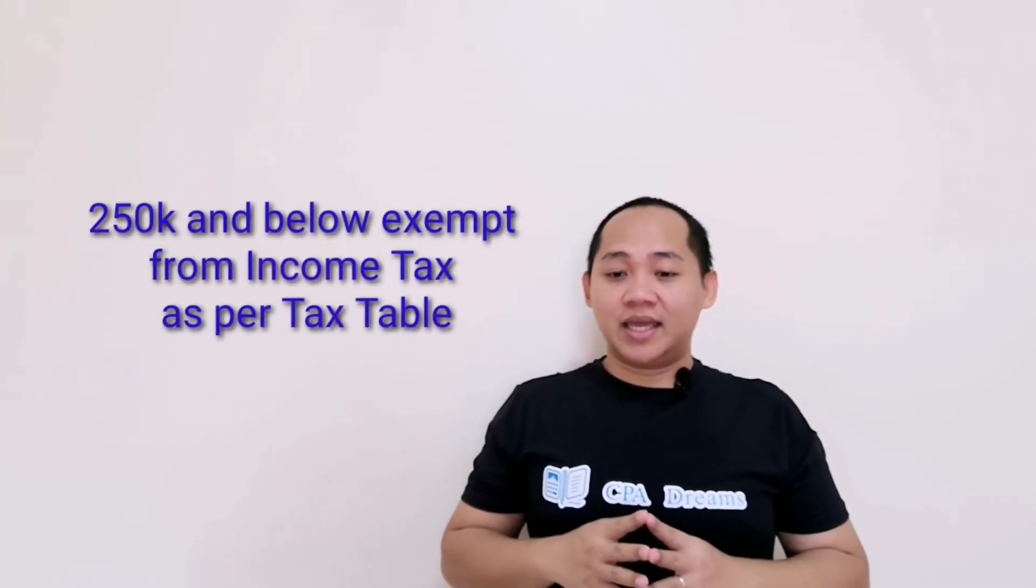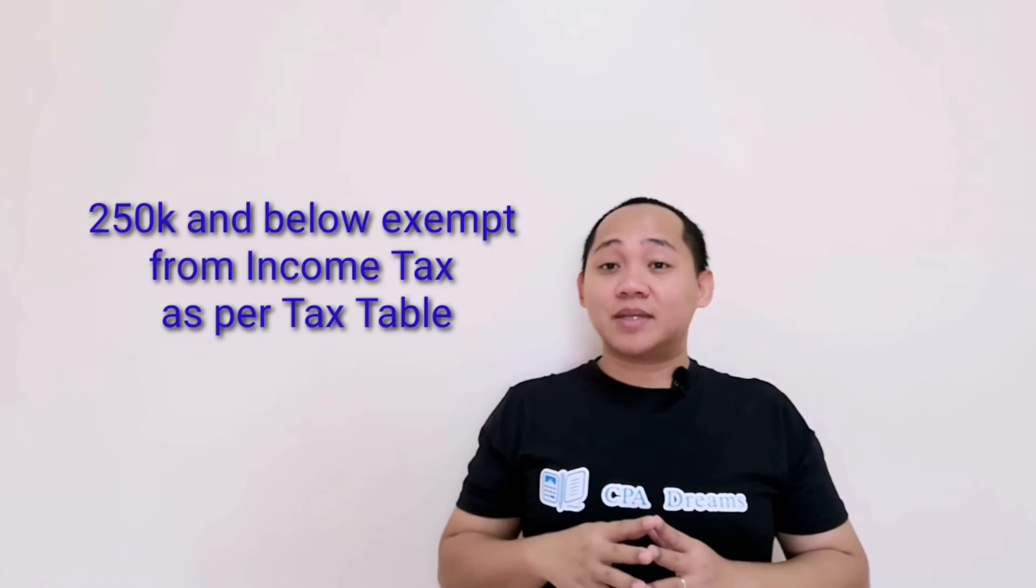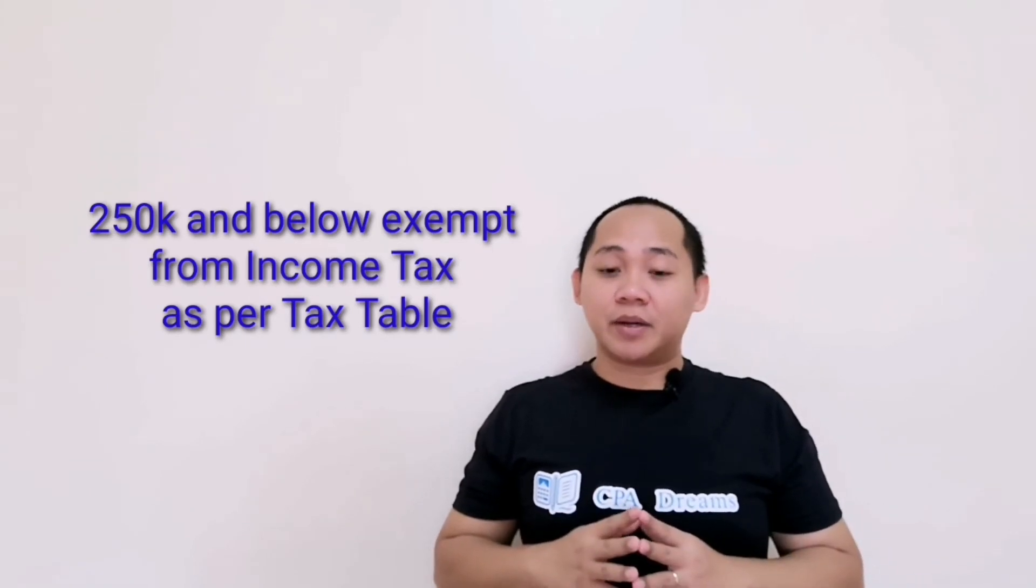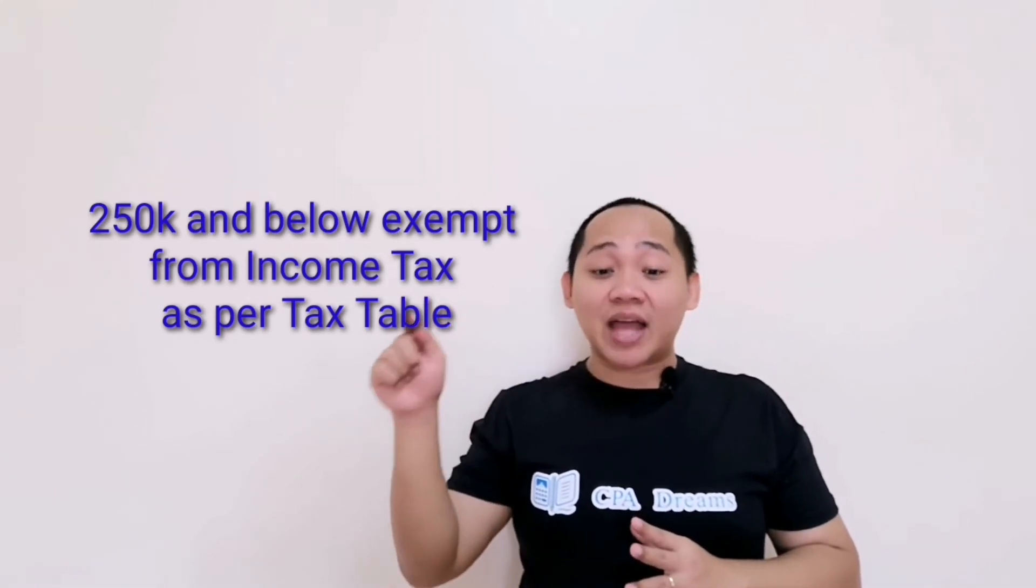Yun kagad yung level ng exemption na meron ka. So that means 250,000 annual income of the individual taxpayer from regular income tax will be exempted, right? Embedded in the income tax table for individual taxpayer. As such, there is no need to separate or deduct the personal exemption. Kaya makikita mo sa income tax table, 250,000 kagad is exempted. So those that are earning below 250,000 or 250,000 will be exempted in paying income tax.